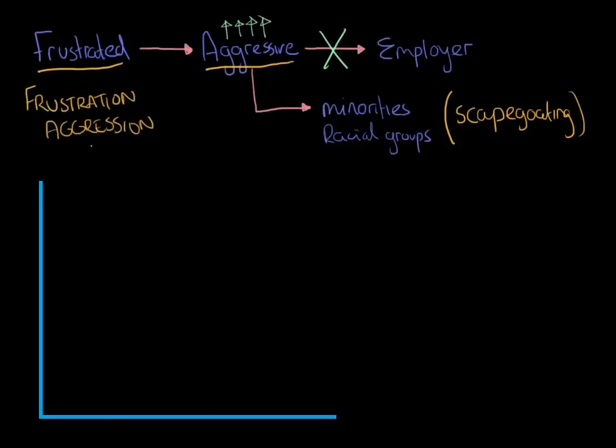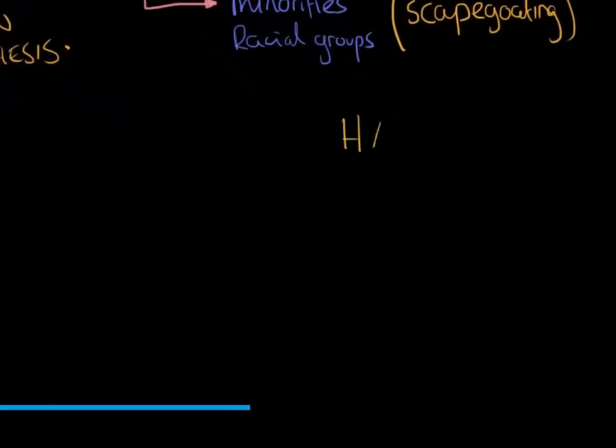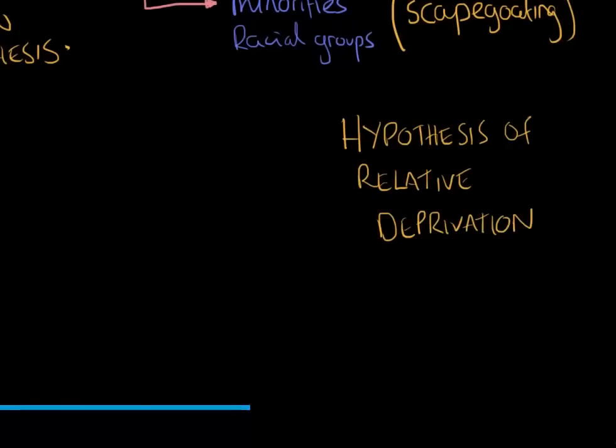In line with the frustration-aggression hypothesis, I want to tell you about another hypothesis, and this is called the hypothesis of relative deprivation. Now, what the hypothesis of relative deprivation suggests is that people become very frustrated, and you get an upsurge in prejudice and discrimination when people feel deprived of something they feel entitled to.